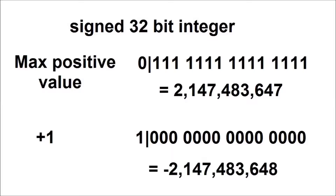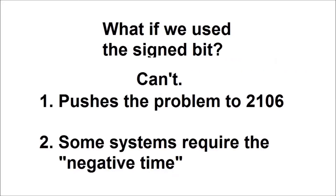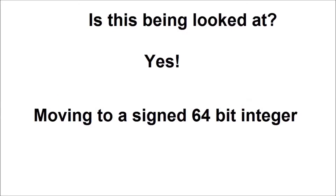When you add 1 to that, the signed bit becomes 1, meaning negative, and the rest becomes 0. The computer interprets this as the lowest possible value of just over minus 2 billion. You may be asking yourself: why don't we remove the signed bit and use that to count the number of seconds as well? Well, there are a couple of issues. First, it doesn't really fix the issue — it merely pushes it further back to 2106. And secondly, there are some systems that actually need to count a negative number of seconds, so removing the signed bit would cause issues for those systems.